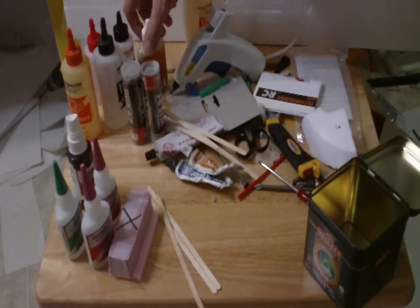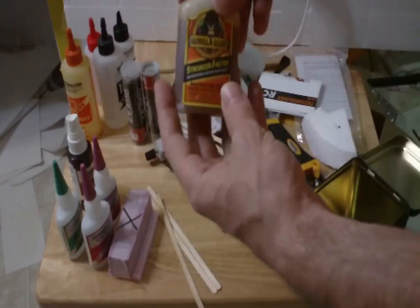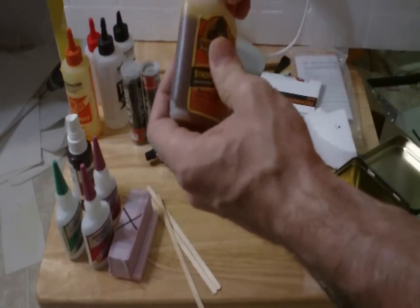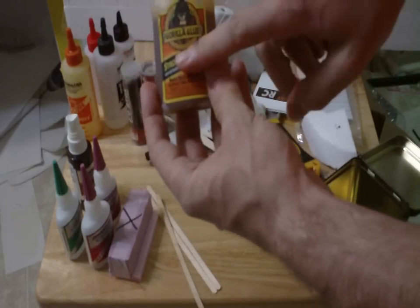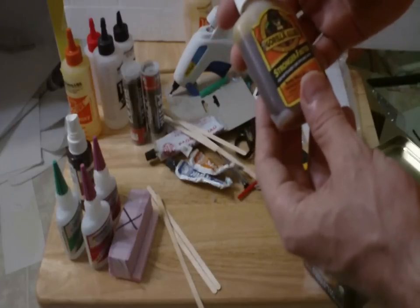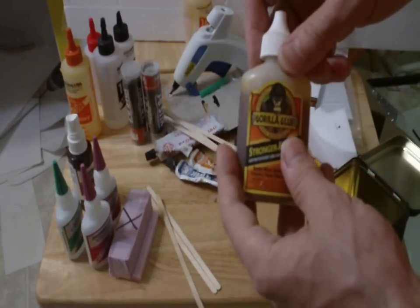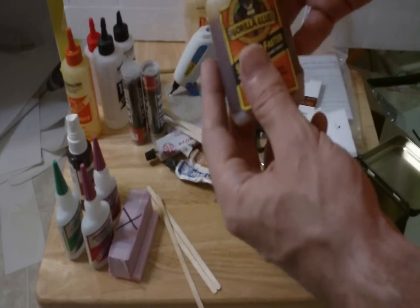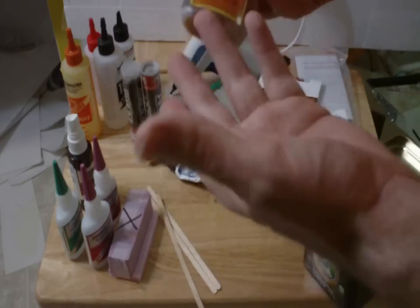Then you have Gorilla Glue. This stuff is pretty good. It takes a while to set and to cure, and of course the one problem is it expands out. Once it sets, it expands. In a weird way, it becomes like foam. I don't know how to describe it, but this is foam-safe. You can put this on anything, but I don't use it much.